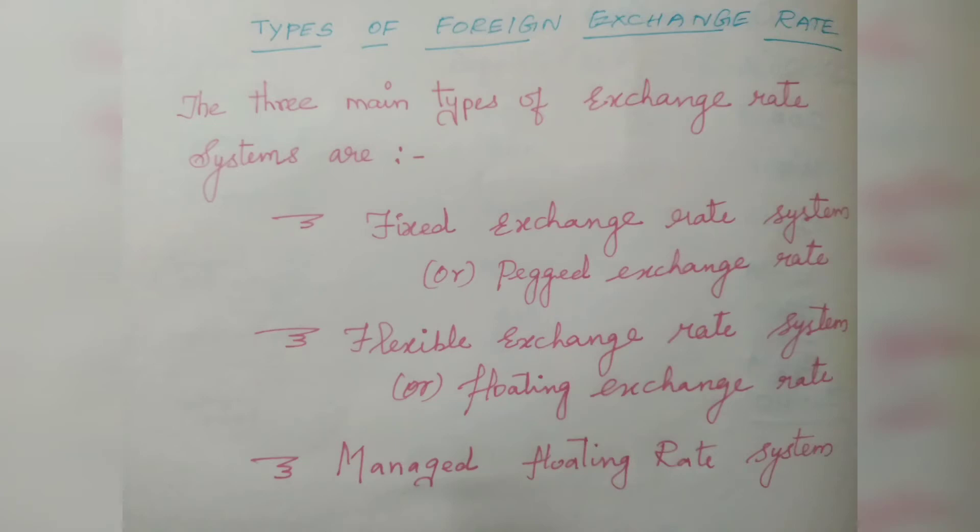Hi everyone, welcome to DD classes. In the last video we looked at the foreign exchange rate system. In this video, we will look at the types of foreign exchange rate systems. The three main types of exchange rate systems are fixed, flexible, and managed. So in this video we will cover all of them fully.